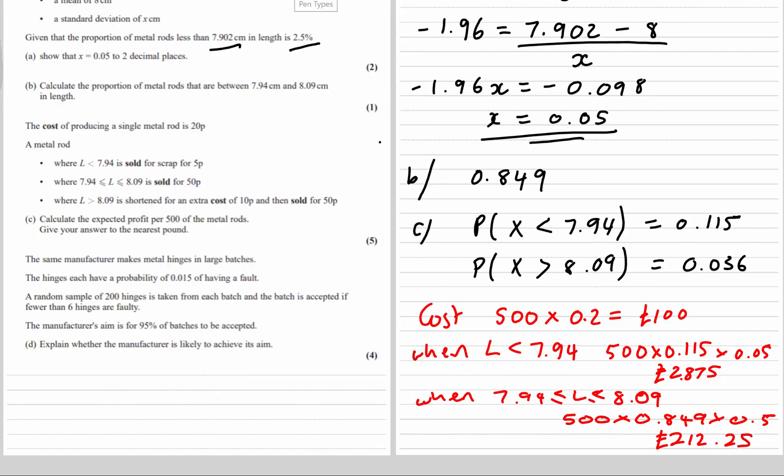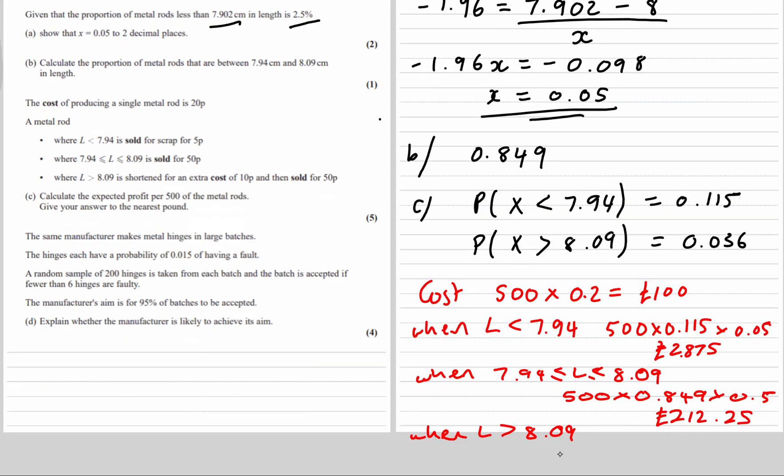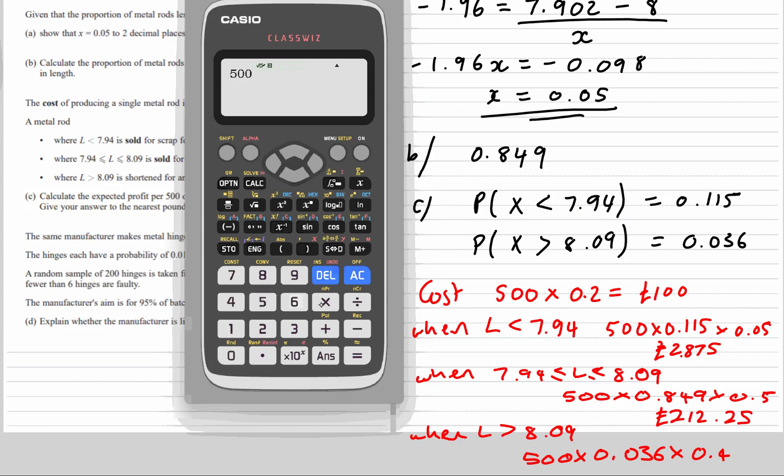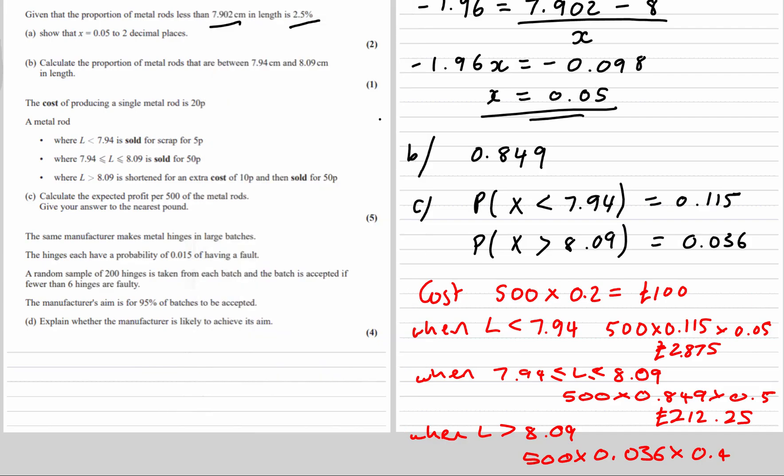And finally bigger than 8.09. So again we've got 500 times the percentage, so 3.6% of 500. They're shortened for 10p then sold for 50p, so that is 40p for each one of those. And that is £7.20.